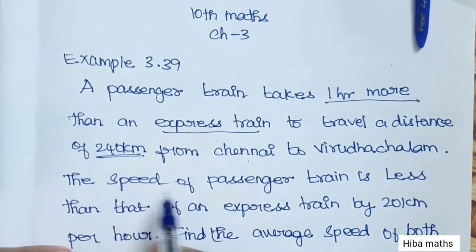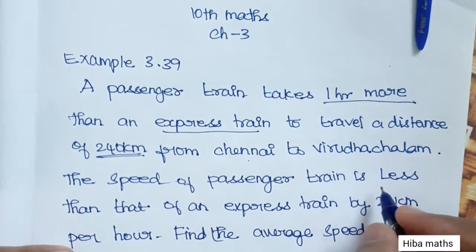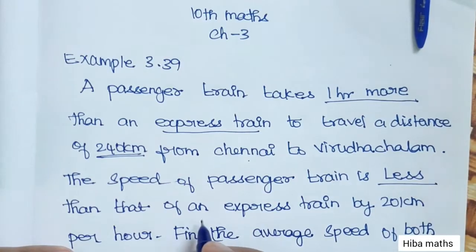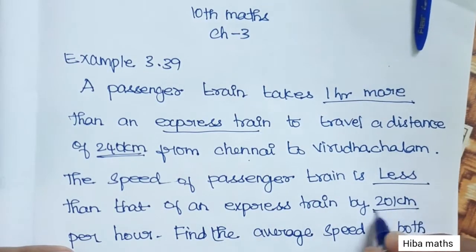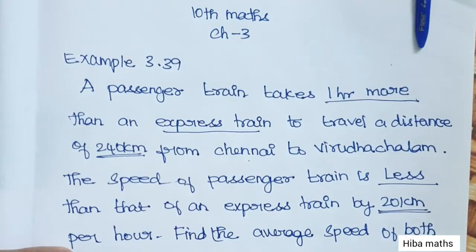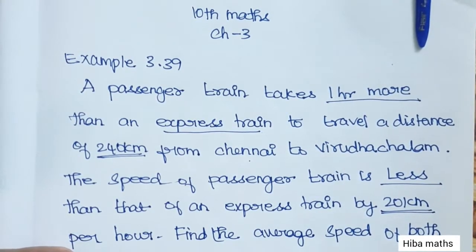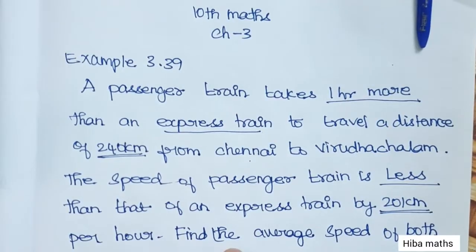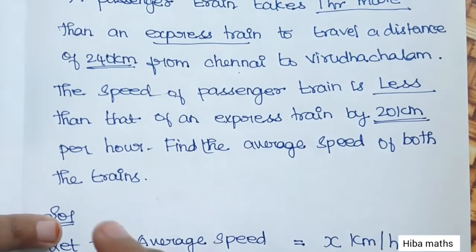The speed of the passenger train is less than that of the express train by 20 km/h. The passenger train takes 1 hour more than the express train. Find the average speed of both trains.